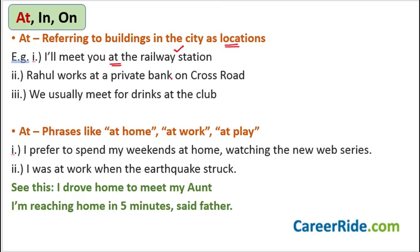'Rahul works at a private bank on cross road.' Where does Rahul work? He works at a private bank. 'We usually meet for drinks at the club.' Where do you meet for drinks? We meet at the club, because this is the location where we meet. So whenever you are using any buildings in your city as locations, you use 'at' as the preposition. With phrases like 'at home,' 'at work,' 'at play' also, you use 'at.'